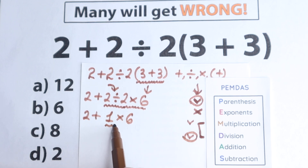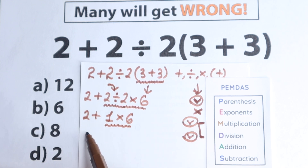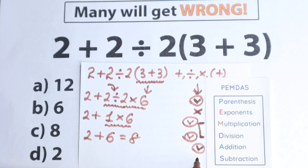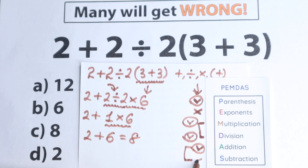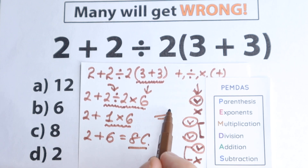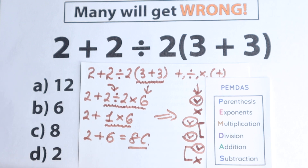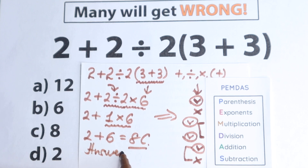Now the final step: addition and subtraction are one common group. We have 2 plus 6, which equals 8. So we have option C as our correct answer. According to a different order of operations you might multiply first and get a different result, but according to PMDMC the answer is 8. You can plug it into a scientific or graphing calculator to verify — a lot of calculators give option C. Thank you for your time and have a great day.